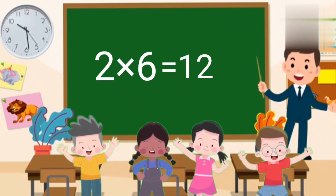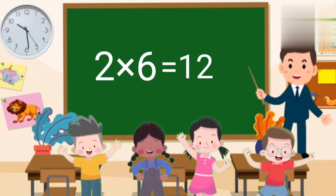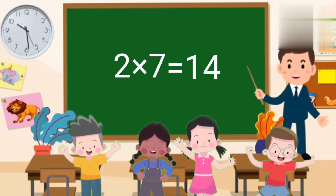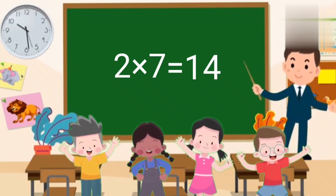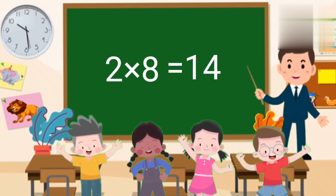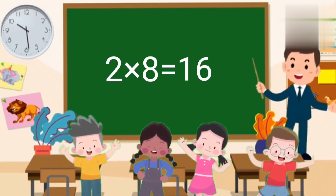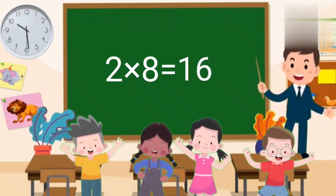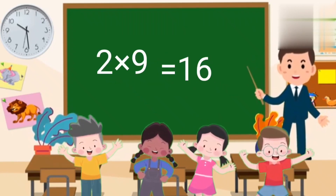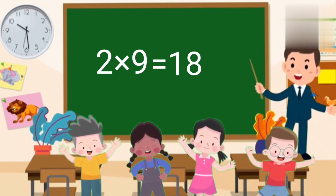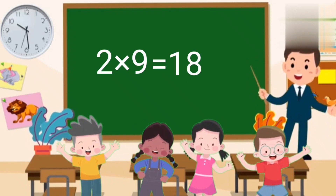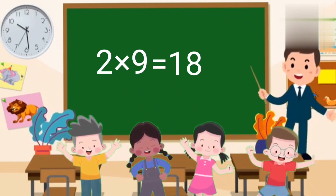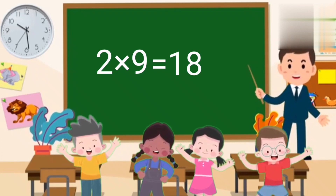2 7s are 14, 2 8s are 16, 2 9s are 18, 2 10s are 20.